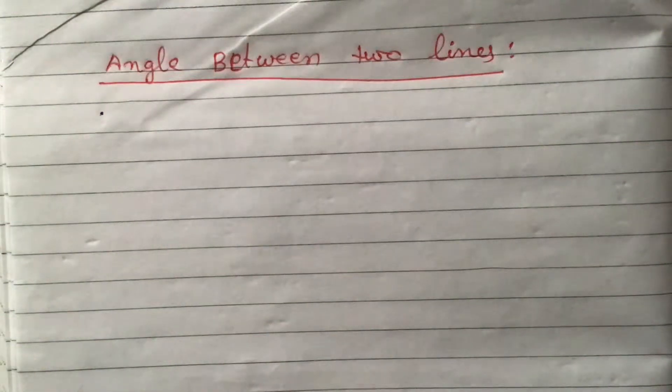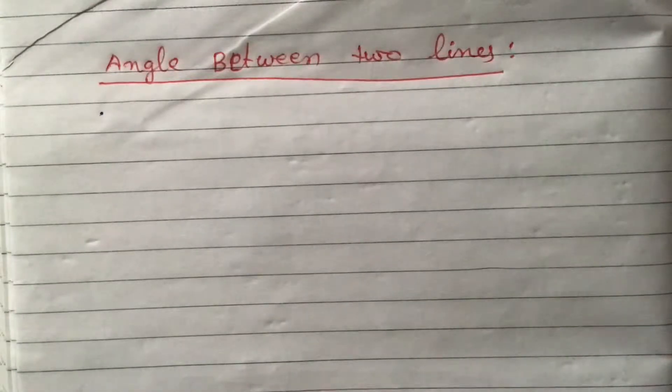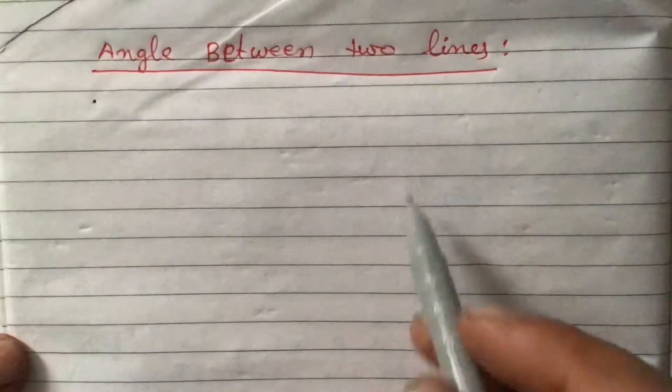Dear students, today I am going to teach you to derive the formula to find the angle between two lines. Let us say the two lines be y = m1x + c1 and y = m2x + c2, and those two lines we can show in a diagram.